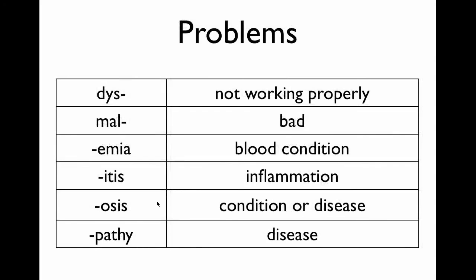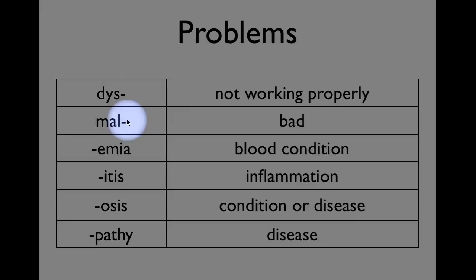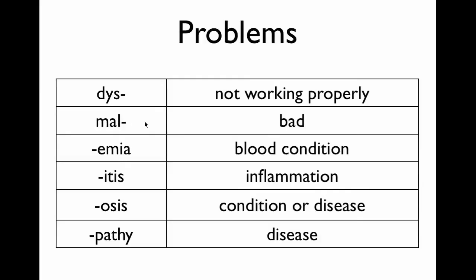Finally, some problem-related terms. Dis means not working properly. Mal as a prefix means bad — the term malady comes from this, and malaria literally means 'bad air,' as the disease was once thought to be spread through the air. Emia refers to a blood condition. Itis means inflammation — anything with itis is an inflammation. Osis is a broadly used term for a condition or disease, as is the suffix pathy, as in neuropathy.